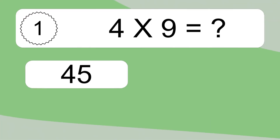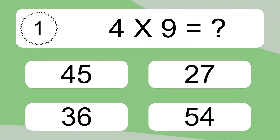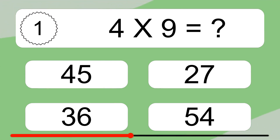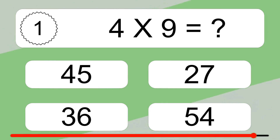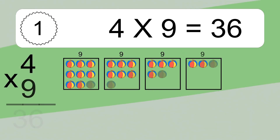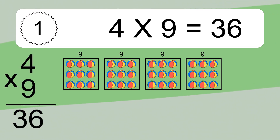4 times 9 equals what? 4 times 9 equals 36.